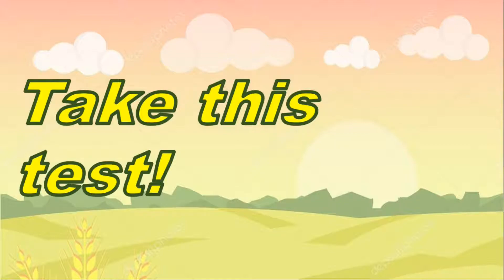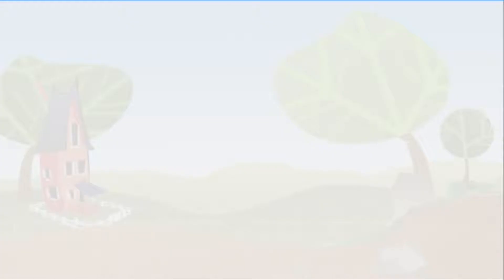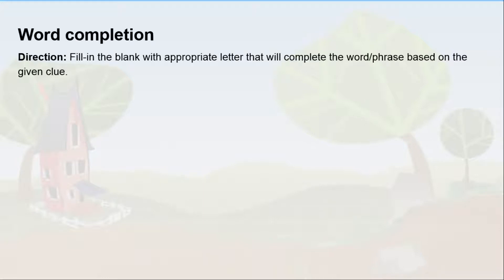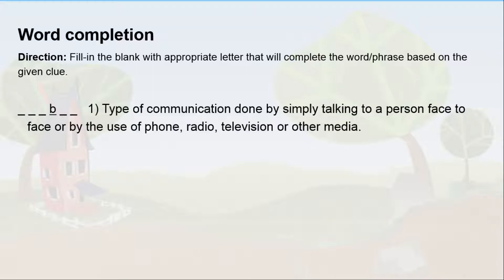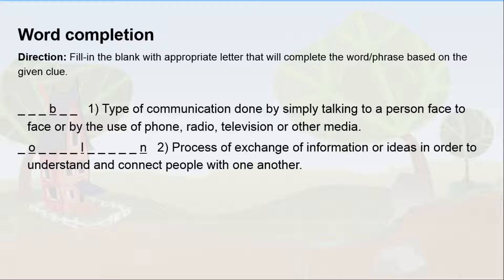Before we discuss, let's take a pre-test. It is all about word completion — you will fill in the blank with the appropriate letters to complete the word or phrase based on the given clue. You can get a piece of paper to write down your answers. First: type of kinetic communication done by simply talking to a person face-to-face or by use of phone, radio, television, or other media. Second: the process of exchange of information or ideas in order to understand and connect people with one another.